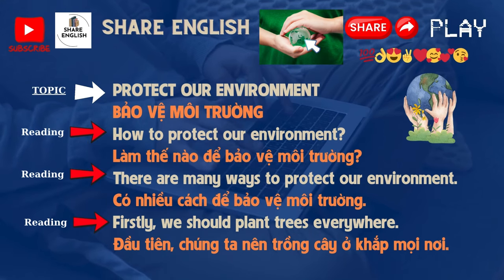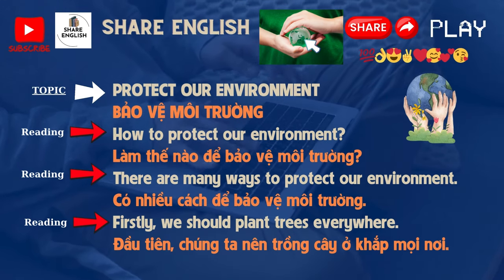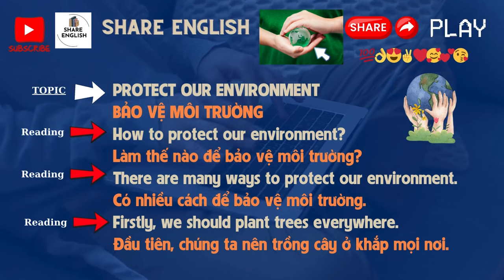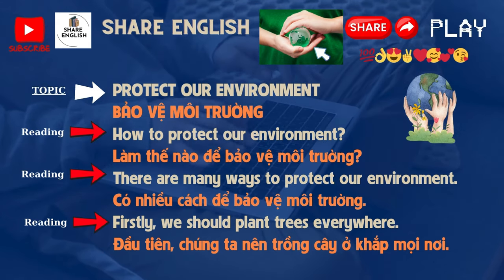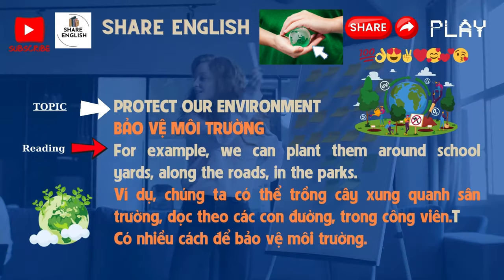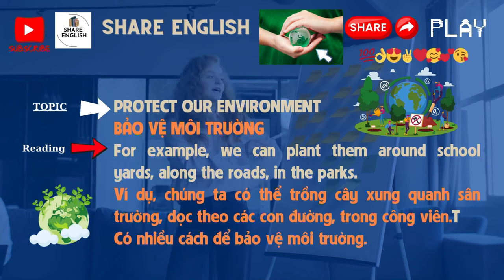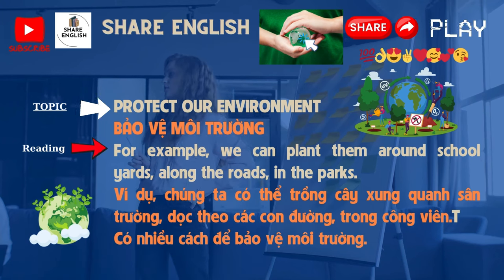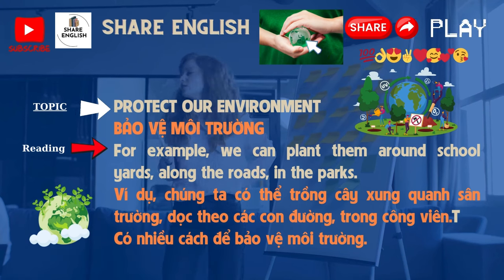There are many ways to protect our environment. Firstly, we should plant trees everywhere. For example, we can plant them around schoolyards, along the roads, in the parks.